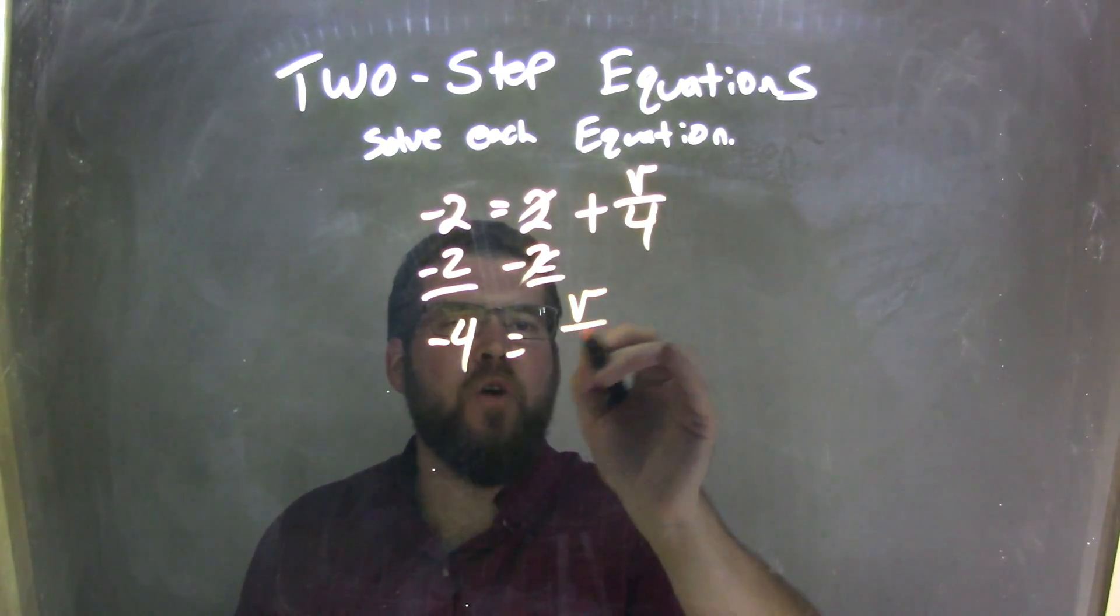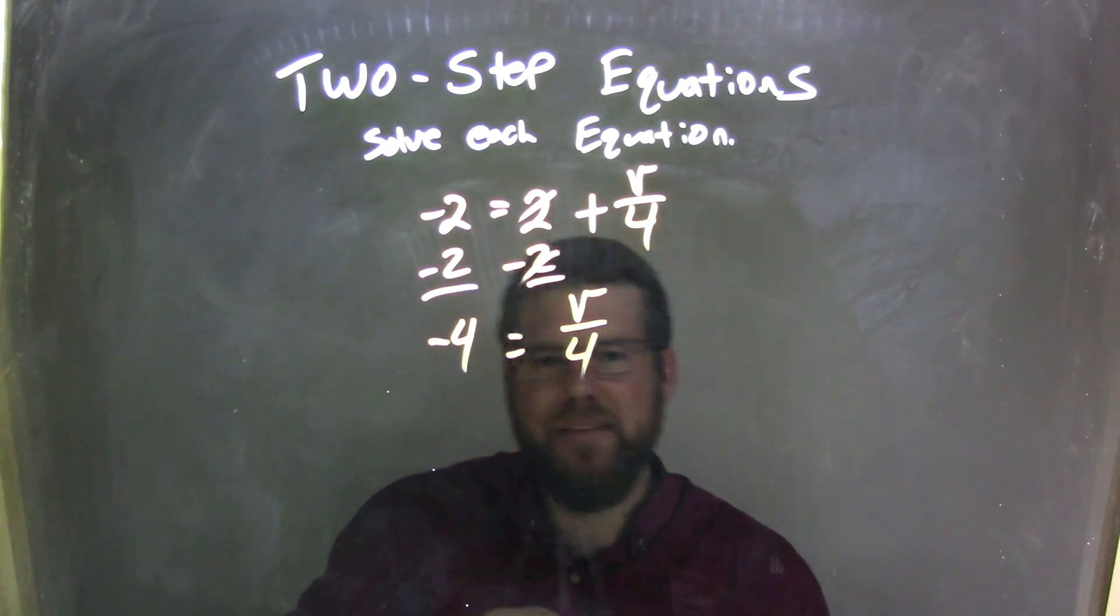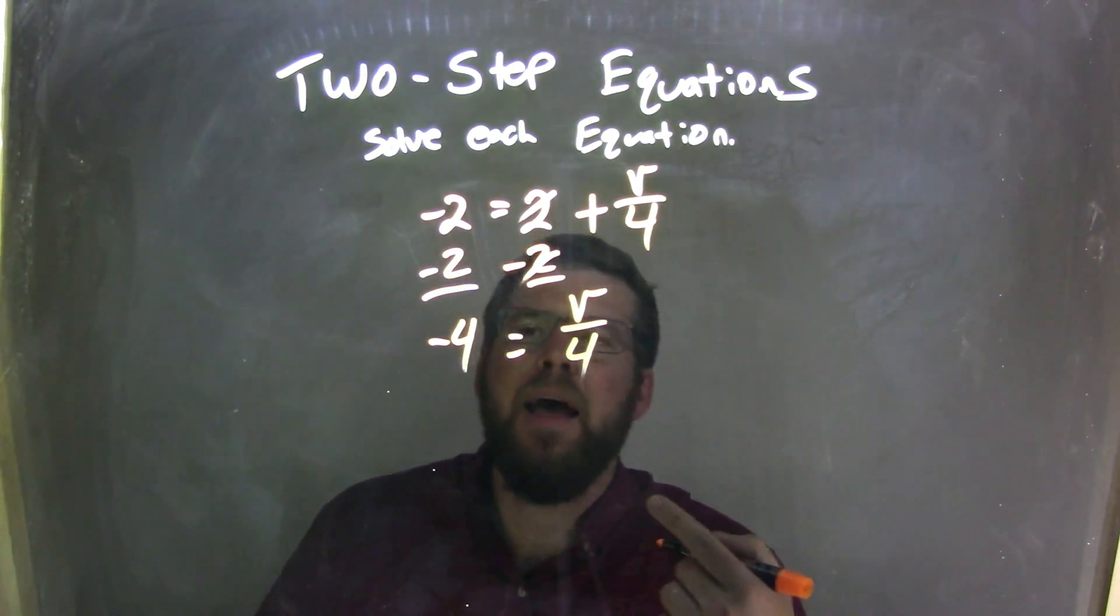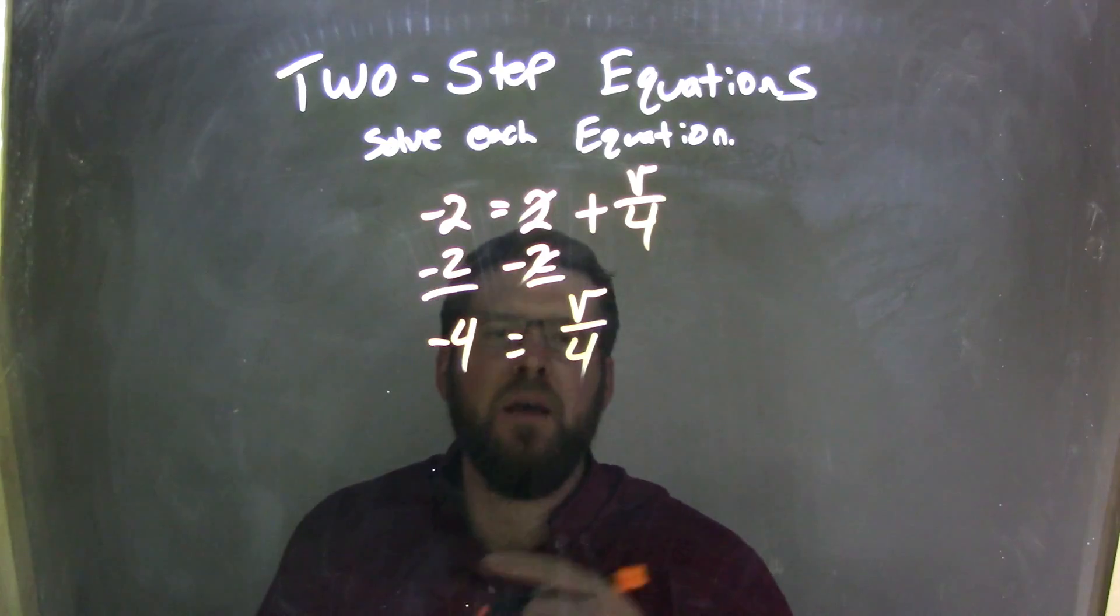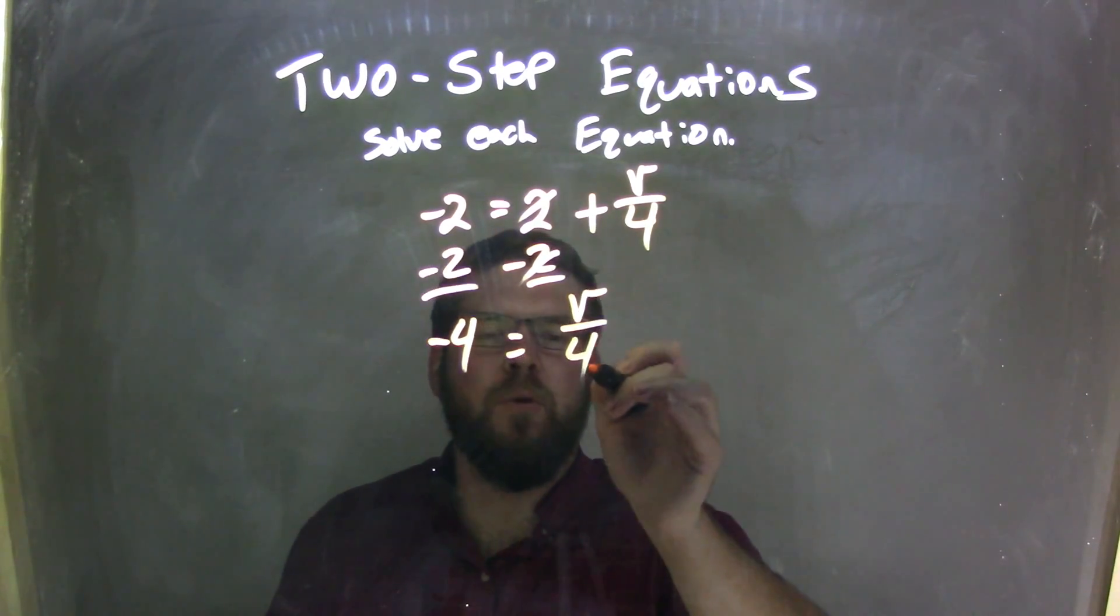And then we have v over a positive 4. Negative 2, we subtract it and move more to the left on the number line, making it negative 4. So then negative 4 equals v over 4.